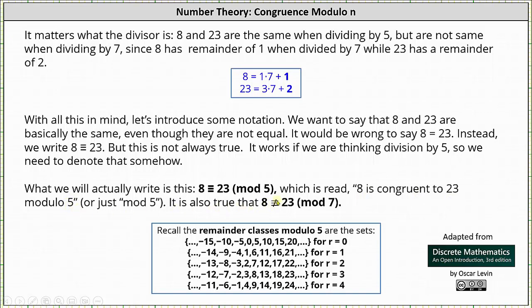It's also true that eight is not congruent to 23 mod seven, again because when dividing by seven, eight and 23 do not have the same remainder.